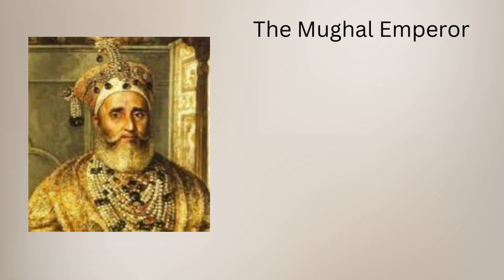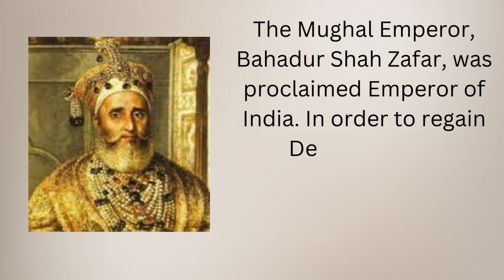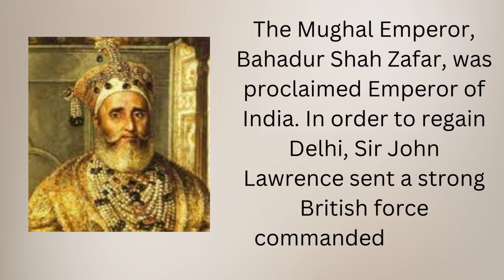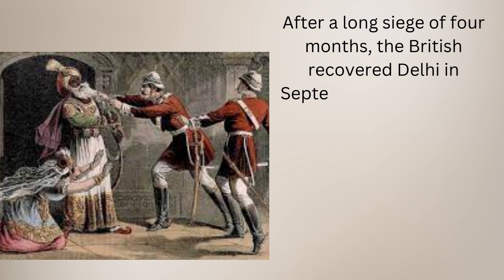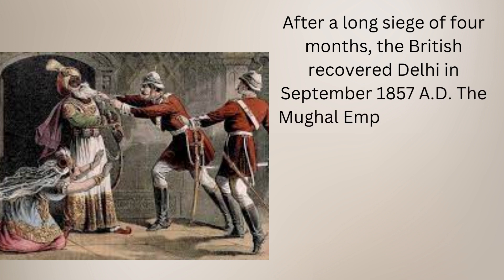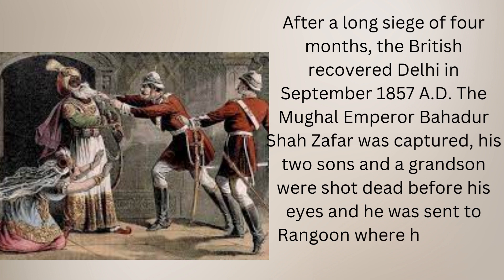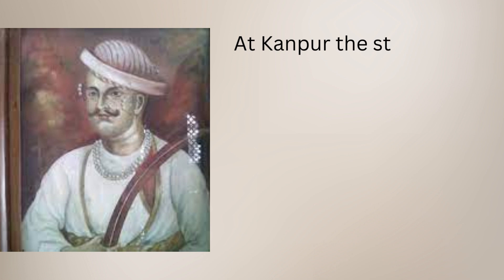The Mughal Emperor Bahadur Shah Zafar was proclaimed Emperor of India. In order to regain Delhi, Sir John Lawrence sent a strong British force under the command of John Nicholson. After a long siege of four months, the British recovered Delhi in September 1857. The Mughal Emperor Bahadur Shah Zafar was captured, his sons and grandsons were shot to death before his eyes, and he was sent to Rangoon where he lived until 1862.